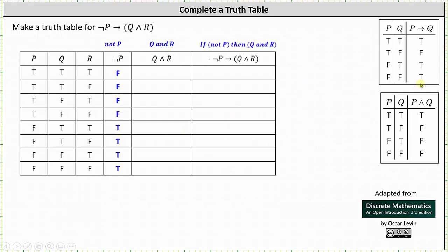Next we have the conjunction q and r. Q and r is true only when q is true and r is true. Analyzing the rows, q is true and r is true in row one as well as row five. In these two rows the conjunction q and r is true; in all other rows the conjunction is false. The column for q and r is: true, false, false, false, true, false, false, false.